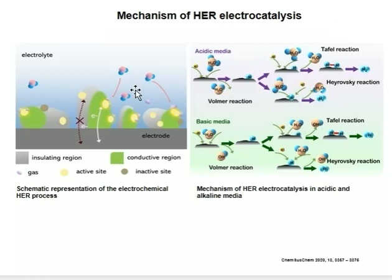When the Volmer reaction is the rate-determining step, the Tafel slope is 118 mV/dec. If the desorption process is fast enough at room temperature, the Heyrovsky reaction or Tafel reaction becomes the rate-determining step of the hydrogen evolution reaction, with Tafel slopes of 39 mV/dec and 29.5 mV/dec respectively.